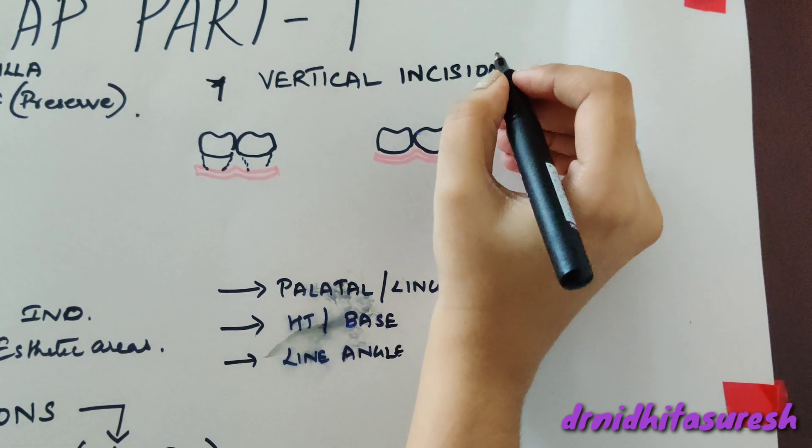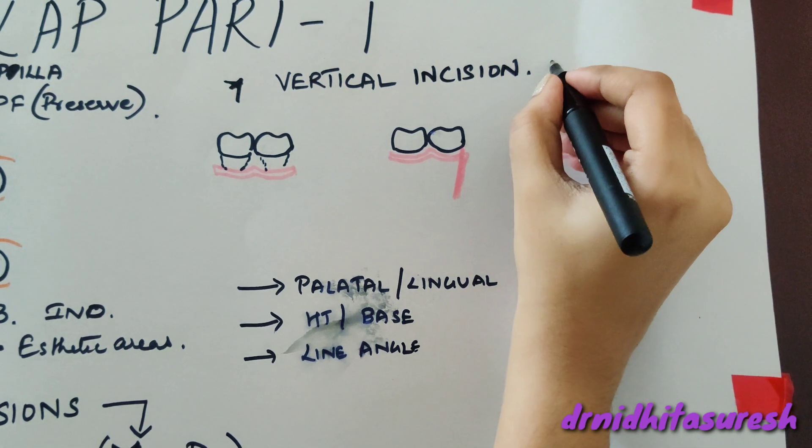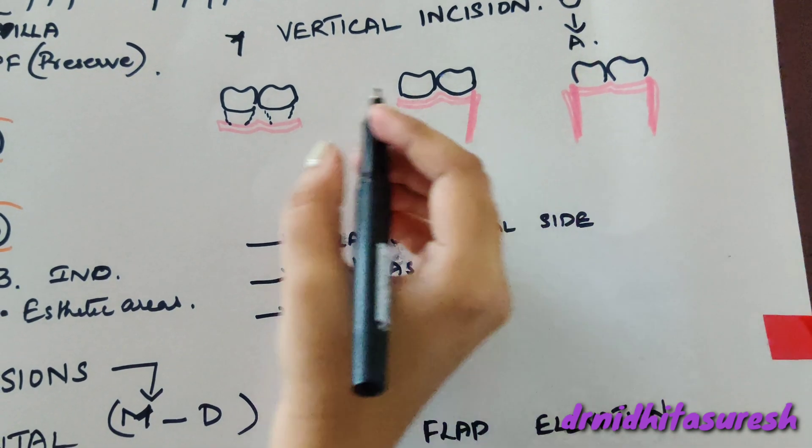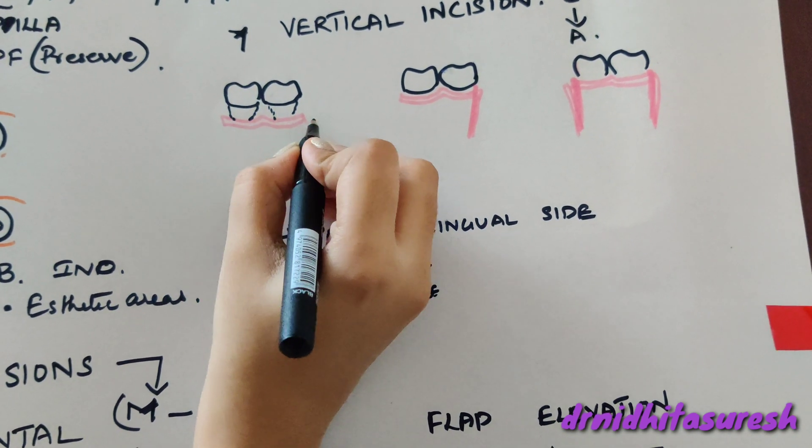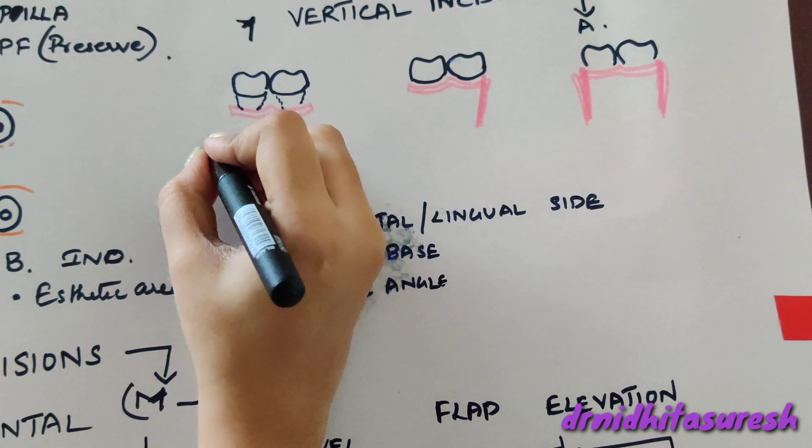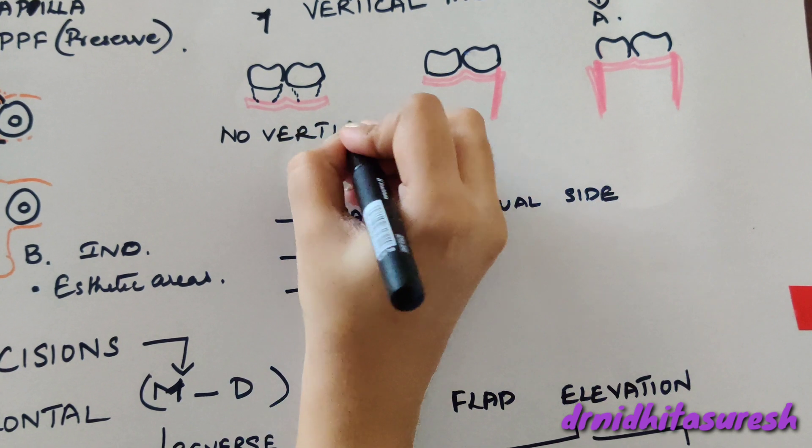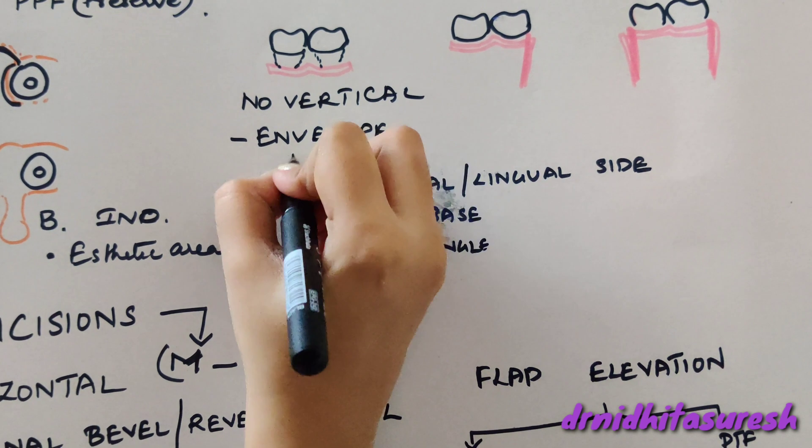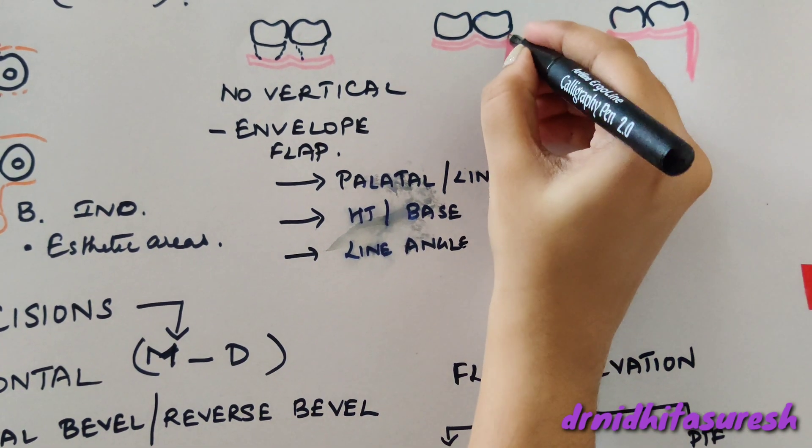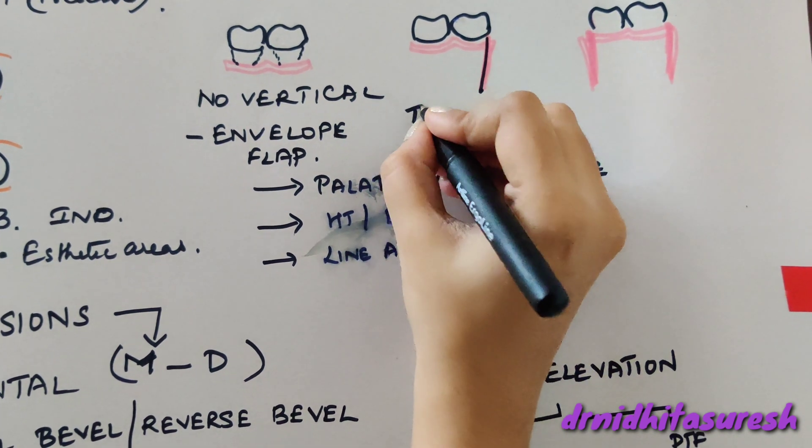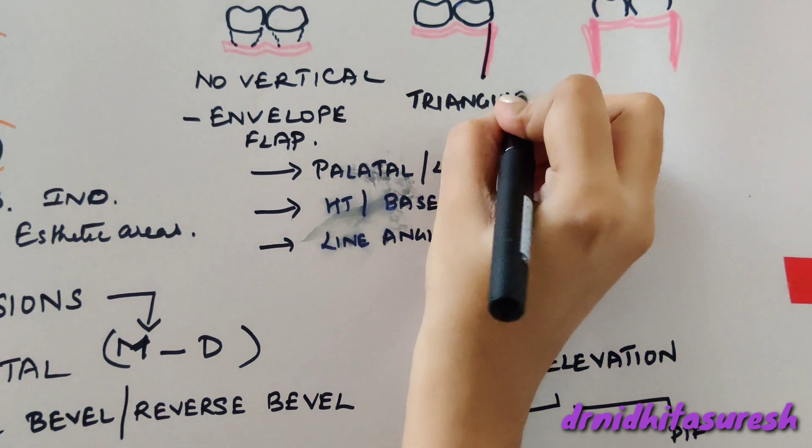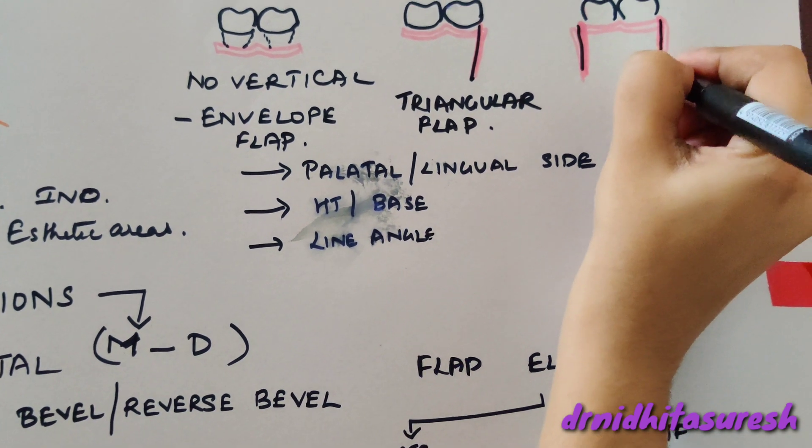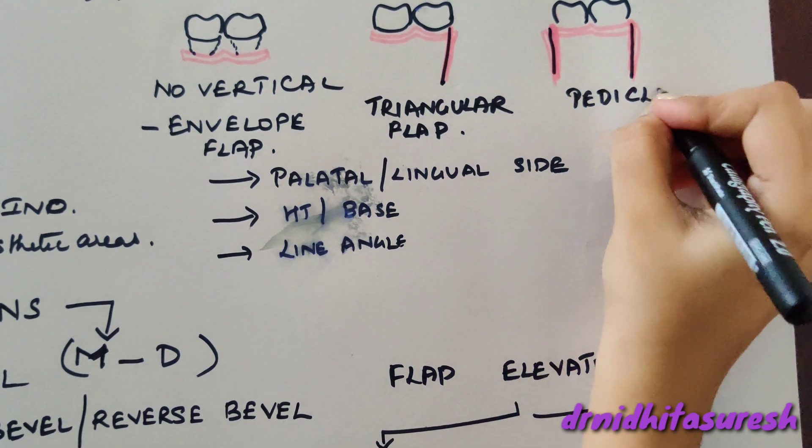Next is the vertical incision. The vertical incision is given from the occlusal to apical direction. When you give the horizontal incision without a vertical incision and elevate the flap, it's called an envelope flap. If one vertical incision is given, we call it a triangular flap, and if two vertical incisions are given, it's called a pedicle flap.